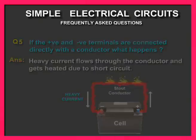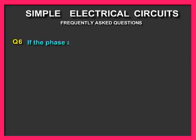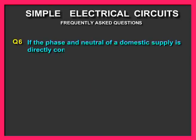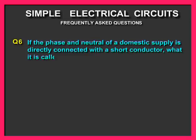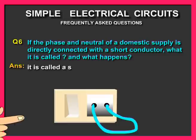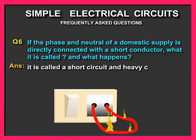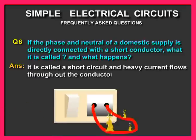Question number six: If the phase and neutral of a domestic supply is directly connected with a short conductor, what is it called and what happens? Answer: It is called a short circuit and heavy current flows throughout the conductor.